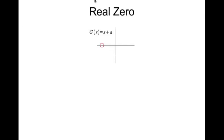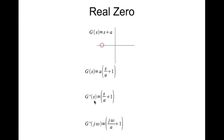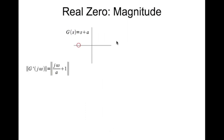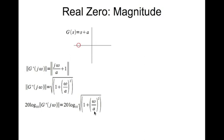Continuing with the mechanics of drawing Bode plots by hand, we are going to look at plotting the Bode plot of a real zero. This is the transfer function of a real zero, and this is how the real zero looks in the complex plane. We rewrite the transfer function like so — all I've done is brought out 'a', which will end up in the Bode gain as shown in the previous lecture. For the remaining part, I'll call it G-dash of s, substitute s equal to j-omega to get this transfer function. The magnitude of the zero equals the square root of the real part squared plus the imaginary part squared. Written in decibels, this is the expression you get.